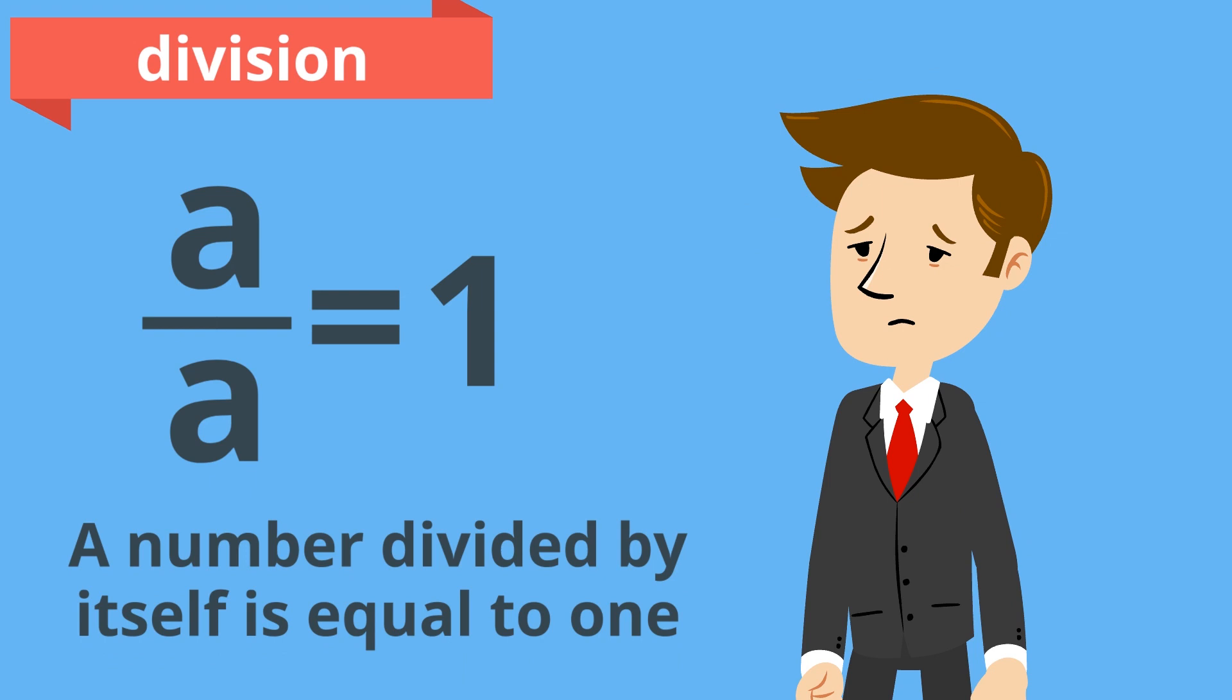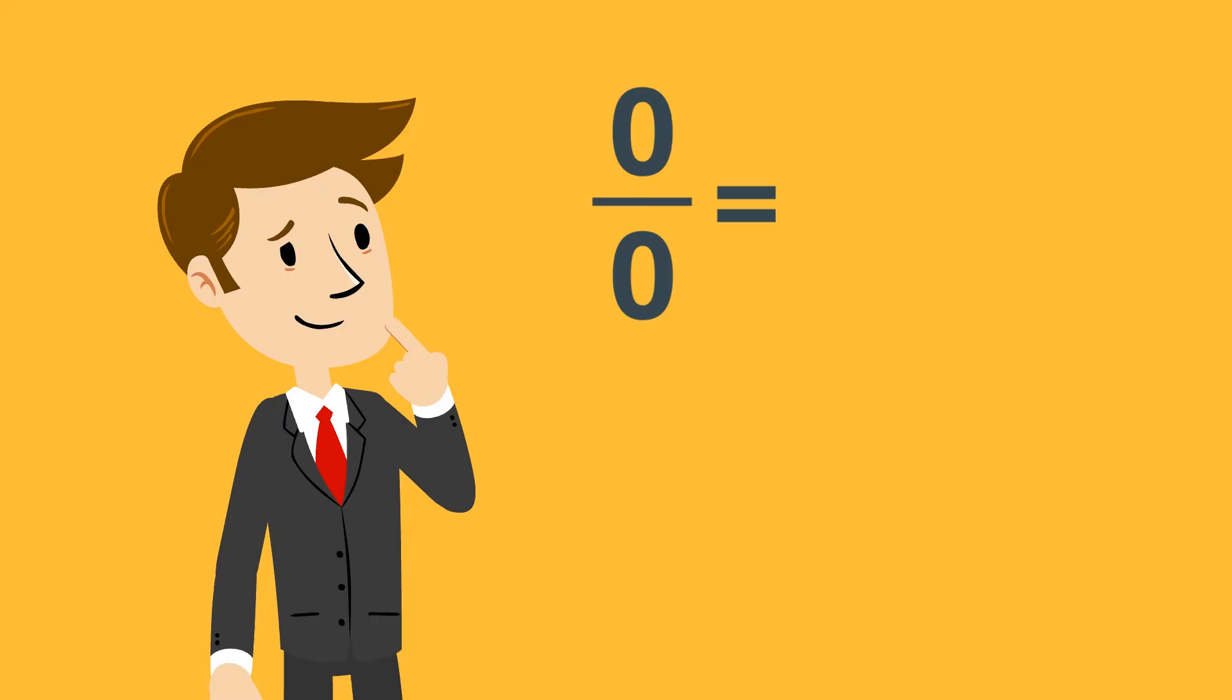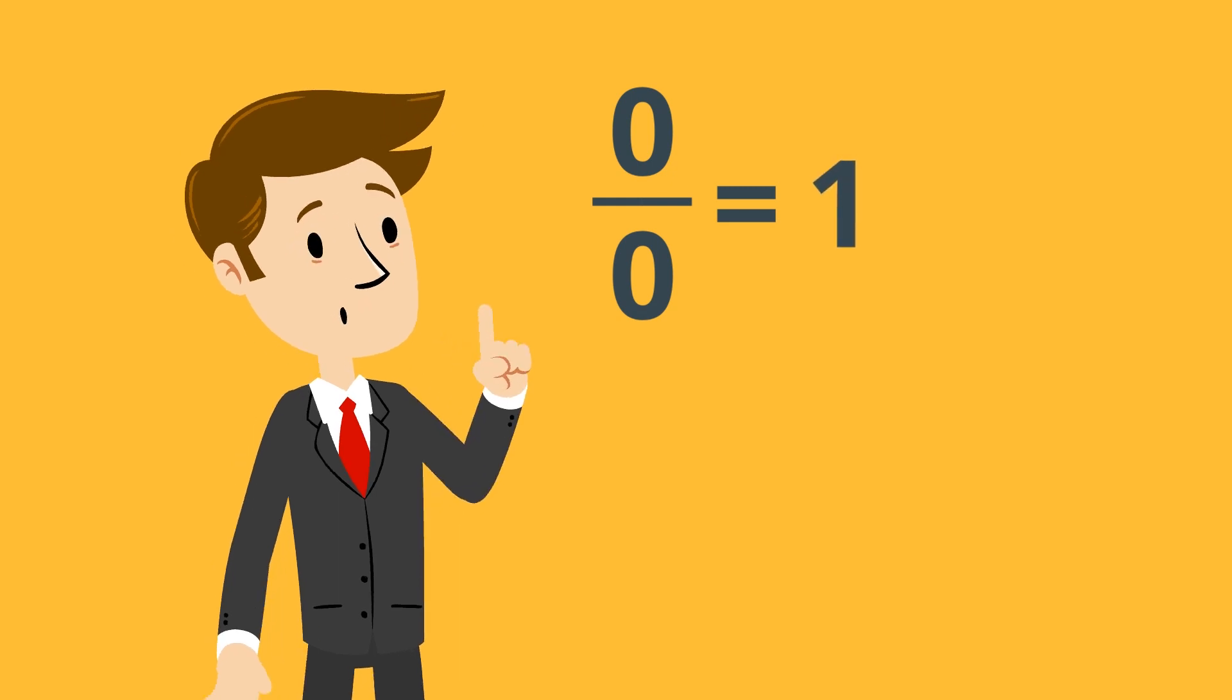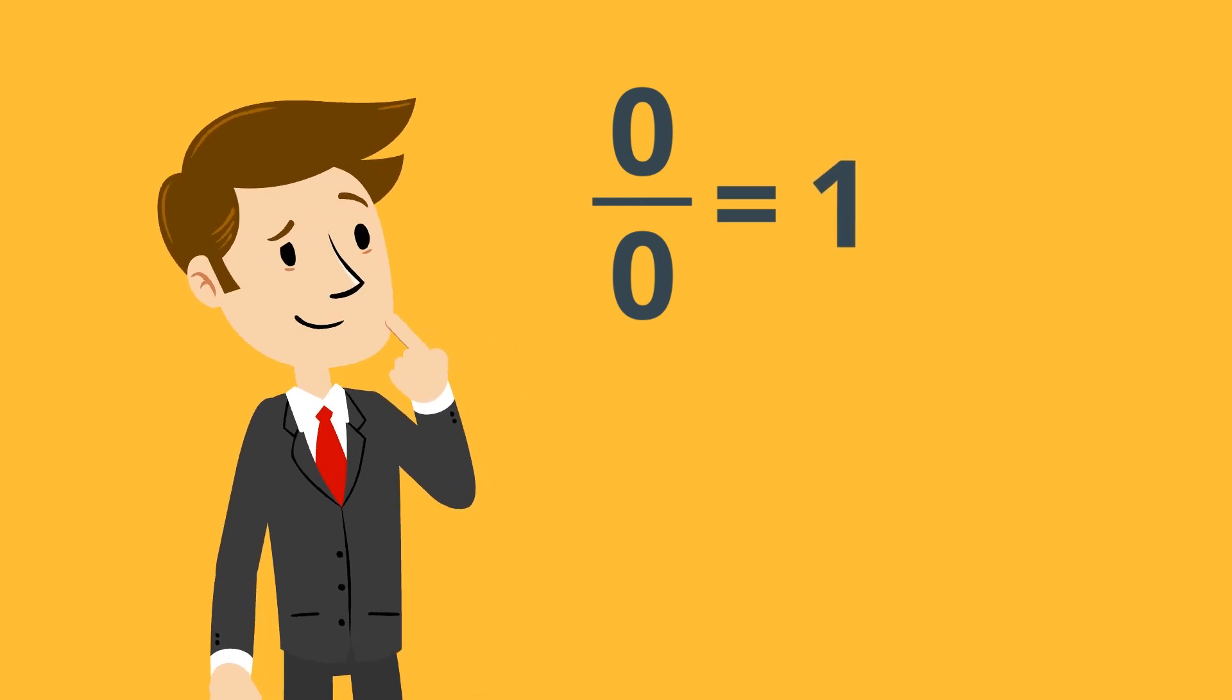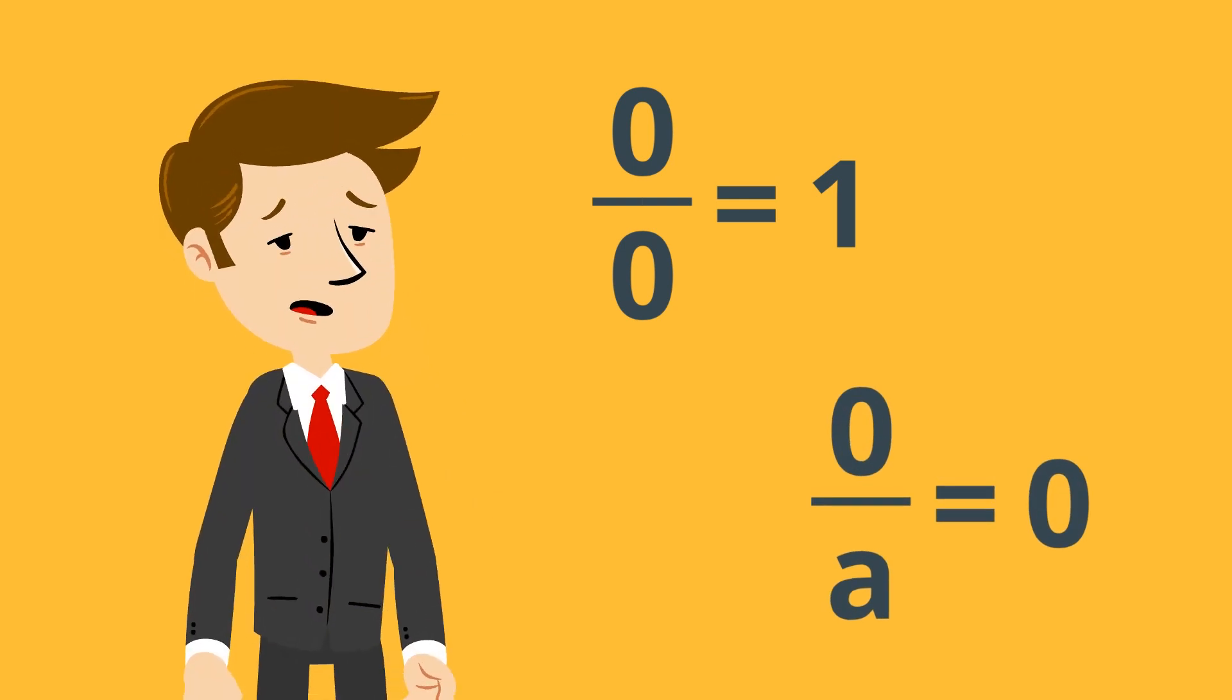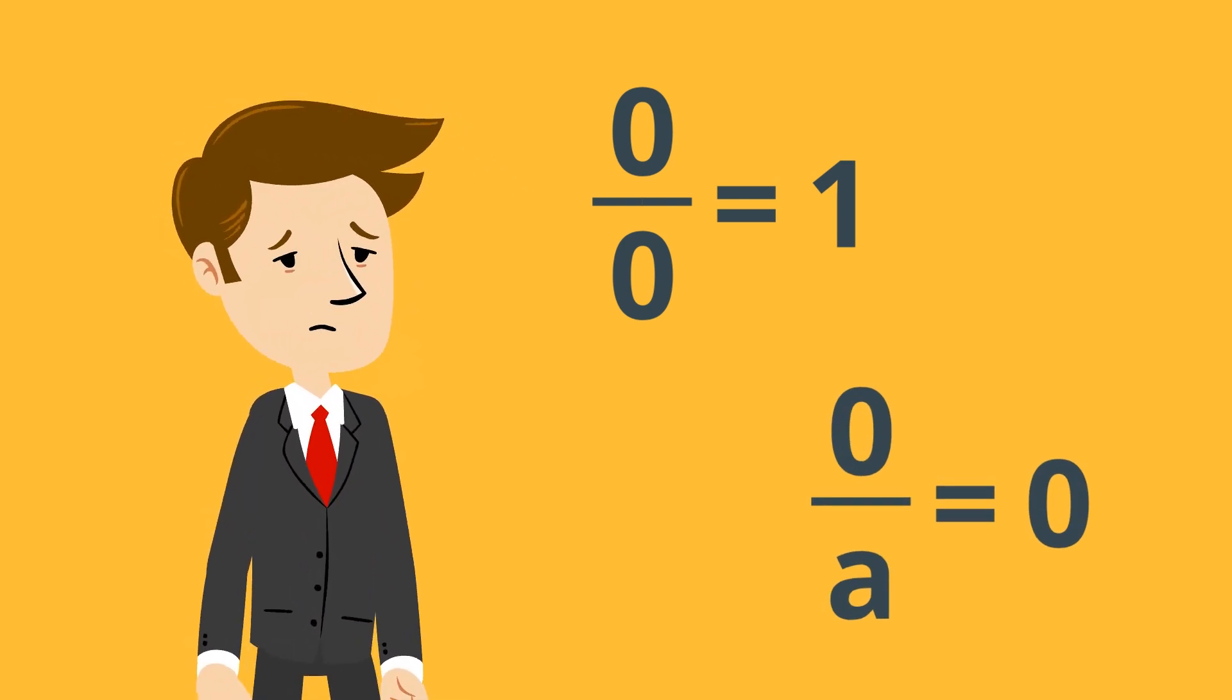We might try and fix this by letting it equal something else. Maybe we'll say zero divided by zero is equal to one. That way it better fits with all of our other rules. But we just covered that when zero is divided by a number, it should be equal to zero. So once again, we're left in a situation that no matter what value we give it, it simply will not fit with our other rules.